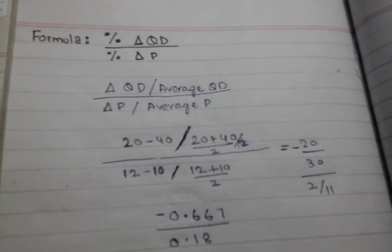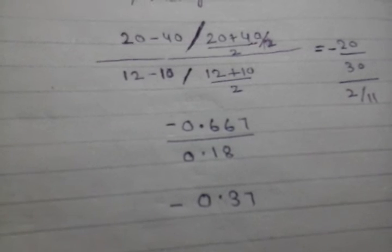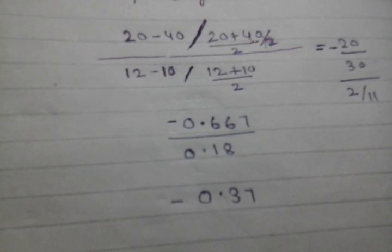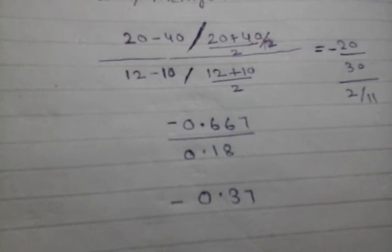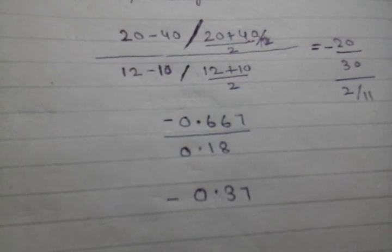In order to get percentage change in price, we will find the difference from 12 to 10. So we will do 12 minus 10 and then divide by average price: 12 plus 10 divided by 2, which is 11.